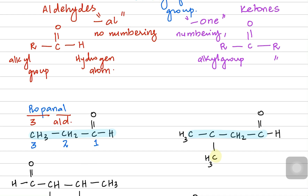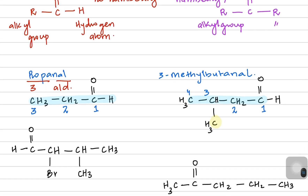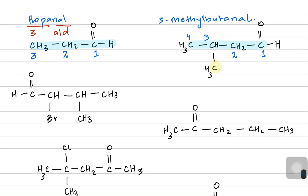The second structure is a four-carbon aldehyde with a branch. When we number it, it becomes one, two, three, four. There's a branch on carbon three, so we're going to call it 3-methyl, and then butanal. So the name is 3-methylbutanal — a substituent on carbon three and overall a four-carbon aldehyde.